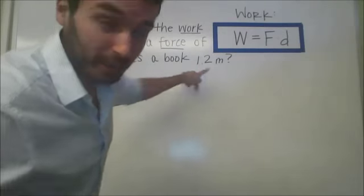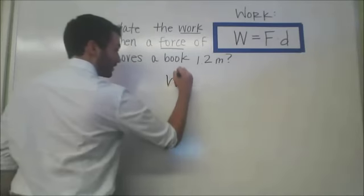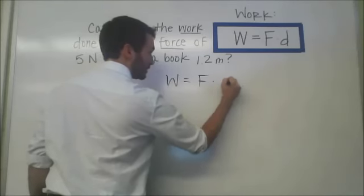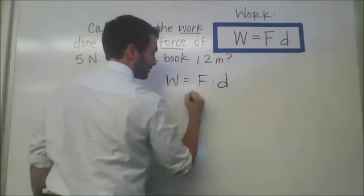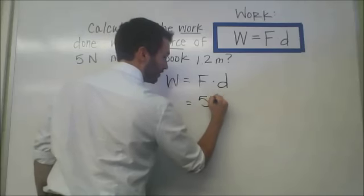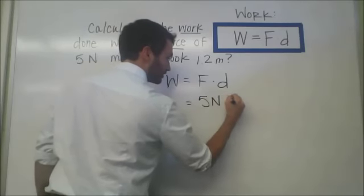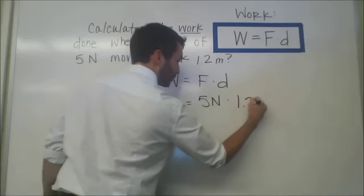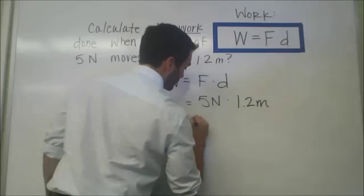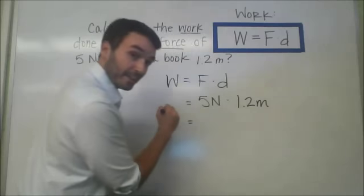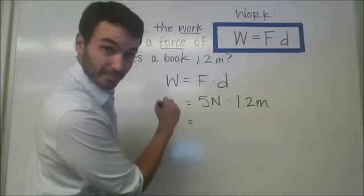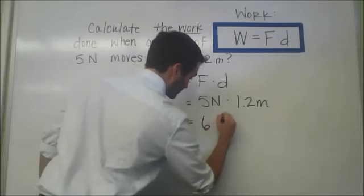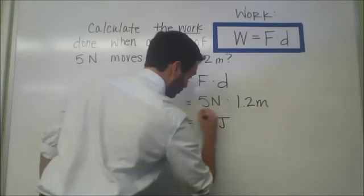Let's set up the equation. If work is equal to force times distance, and we have a force of 5 newtons with a distance of 1.2 meters, our final answer is 6 joules.